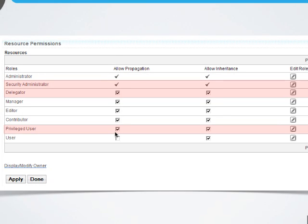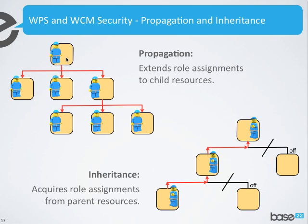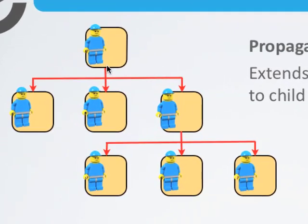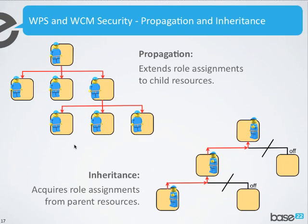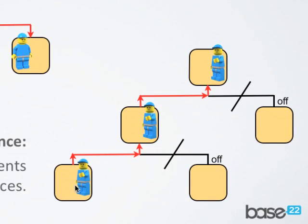Something else I want to show you while we're looking at this screen is Propagation and Inheritance. These are pretty simple concepts. Propagation basically means that you're extending the role assignments from the level that you're applying them down to all child resources — you can see these red lines. If I turn Propagation on, I'm extending the role assignments down to all this item's children. Inheritance means that you're acquiring role assignments from parent resources. If I have Inheritance turned on, this item is going to acquire its role assignments all the way up to its parent resource, as long as Inheritance is turned on all the way down the chain.